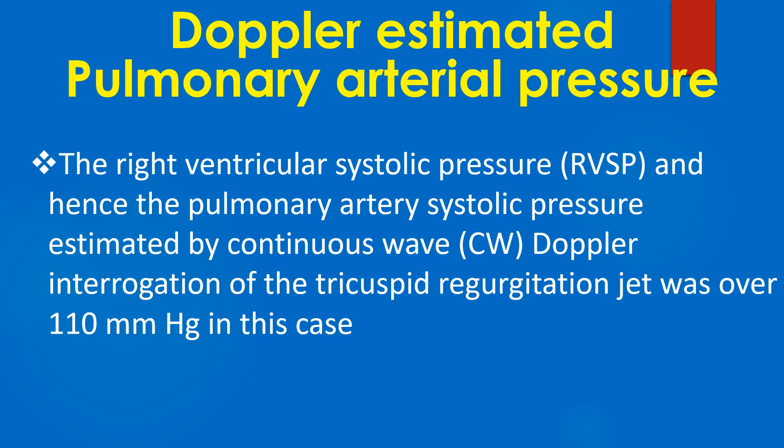The right ventricular systolic pressure, and hence the pulmonary artery systolic pressure, estimated by continuous wave Doppler integration of the tricuspid regurgitation jet was over 110 mmHg in this case.